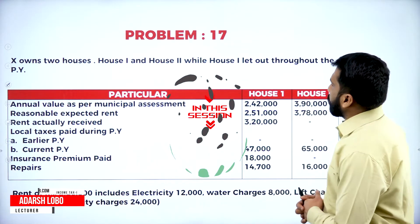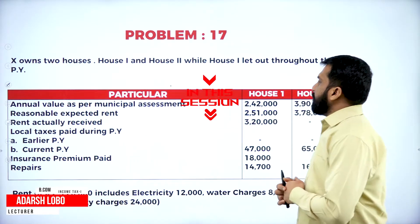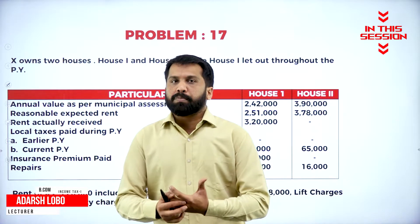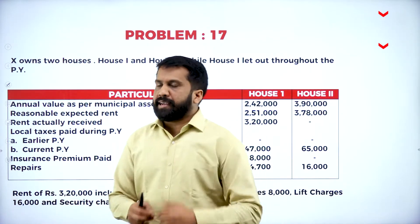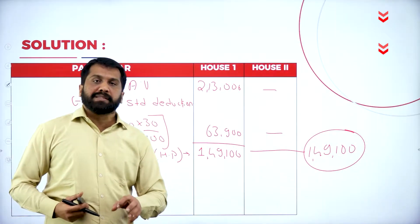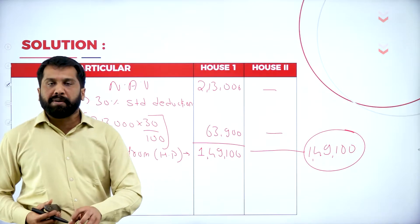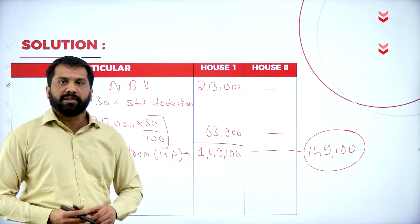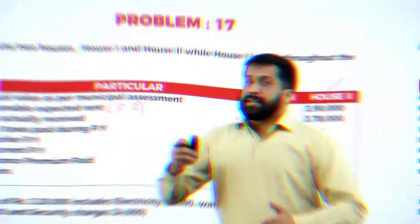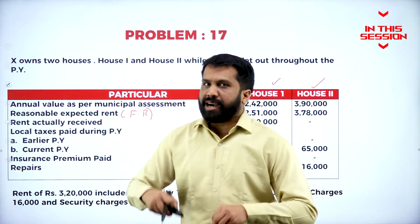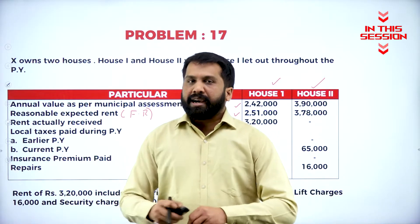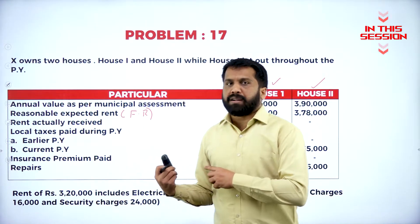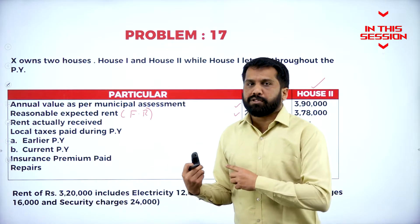House one is let out throughout the previous year — let out meaning the property is given for rent. If the owner has paid any expenses on behalf of the tenant, we are supposed to minus those from the actual rent received. Next year amounts paid in advance, current year local tax paid — all put together is part of your house property income.